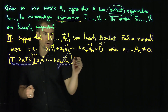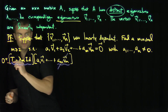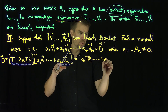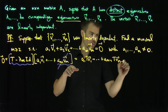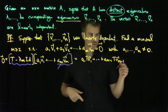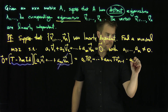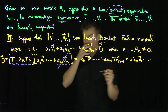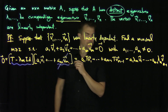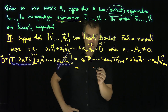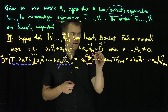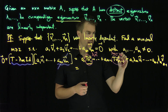Since the whole expression is equal to zero, this whole thing has to be zero. What this really is: a1·T(v1) + ... + a_{m-1}·T(v_{m-1}), minus lambda_m times a1*v1, minus ... minus lambda_m times a_{m-1}*v_{m-1}. Now we use the eigenvalue equation: T(v1) = lambda_1*v1 and T(v_{m-1}) = lambda_{m-1}*v_{m-1}.